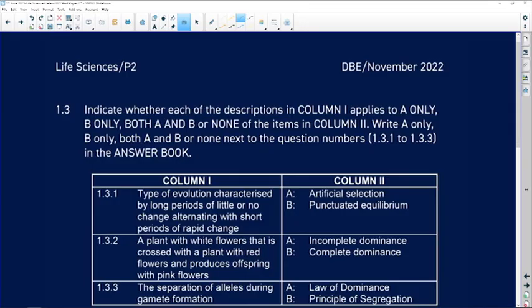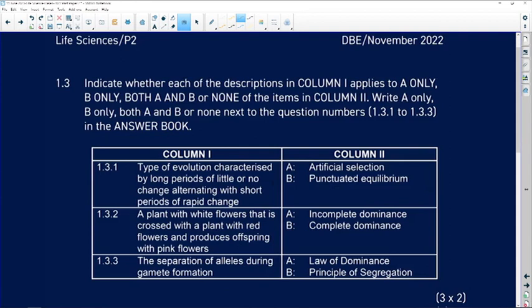1.3. This is where you have your columns and you have to find out does the statement in column 1 relate to A, B, both A and B, or neither A or B. We would write A only, B only, both A and B, or simply none.